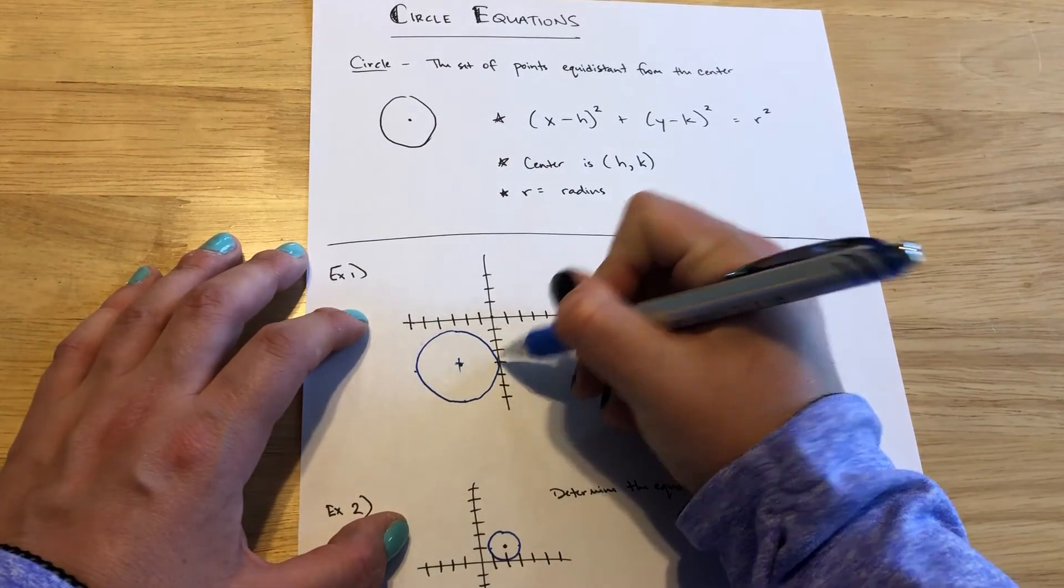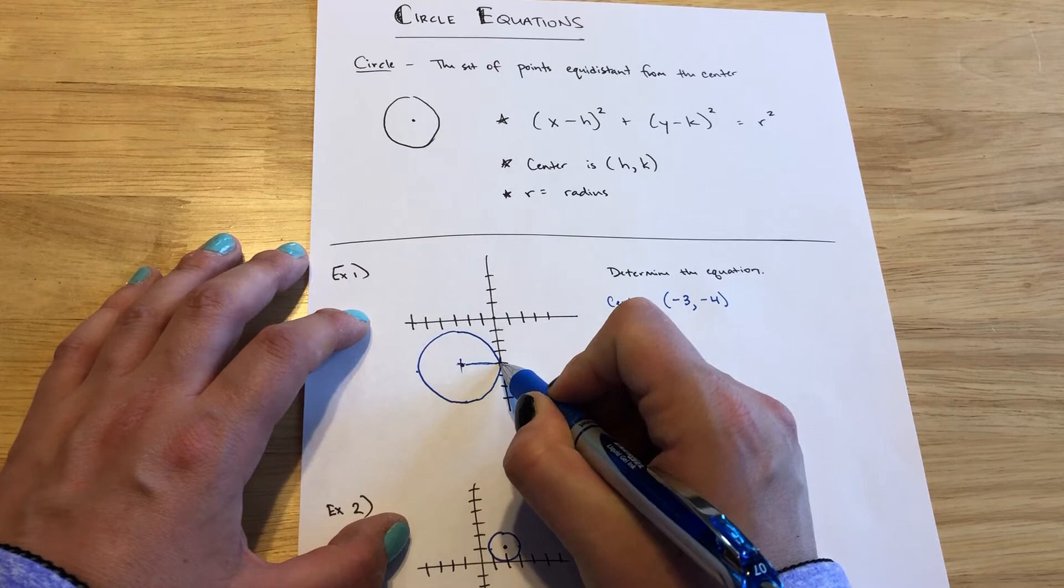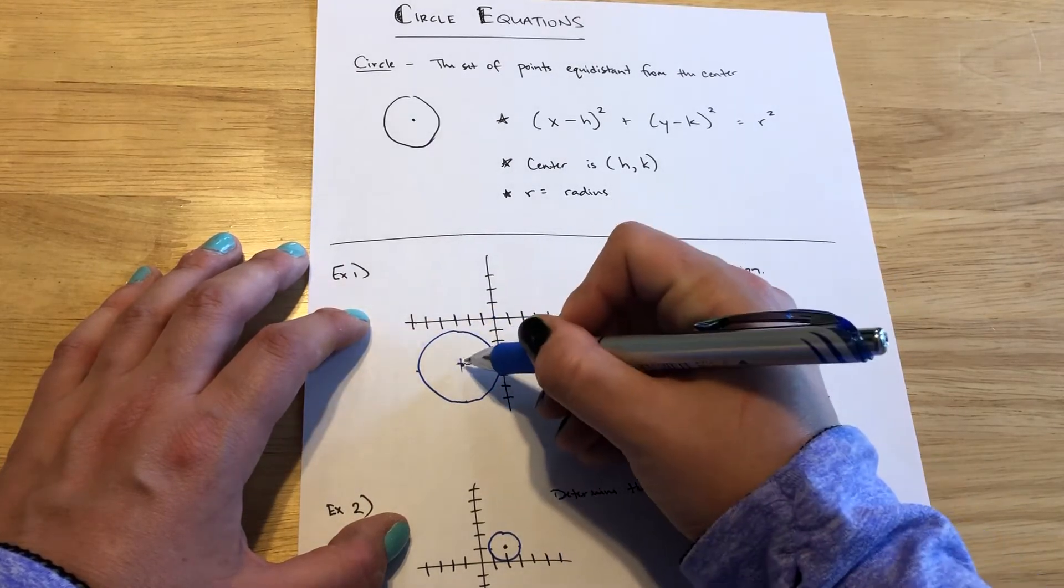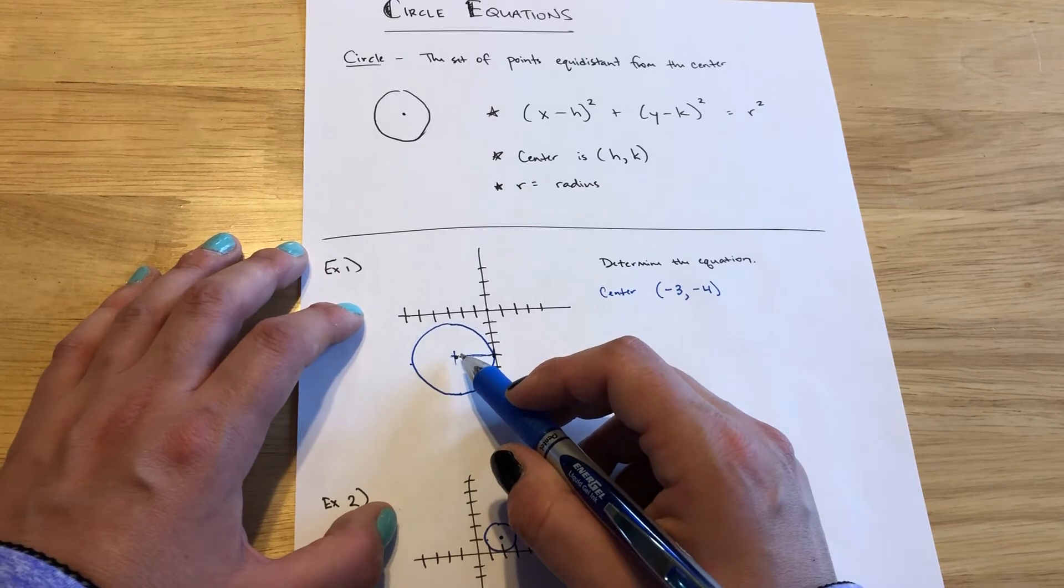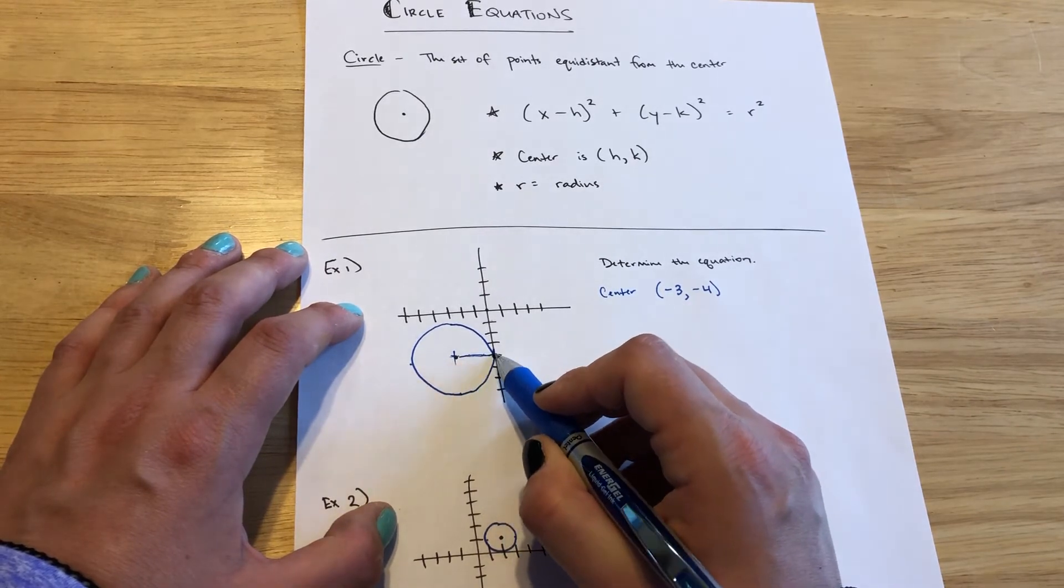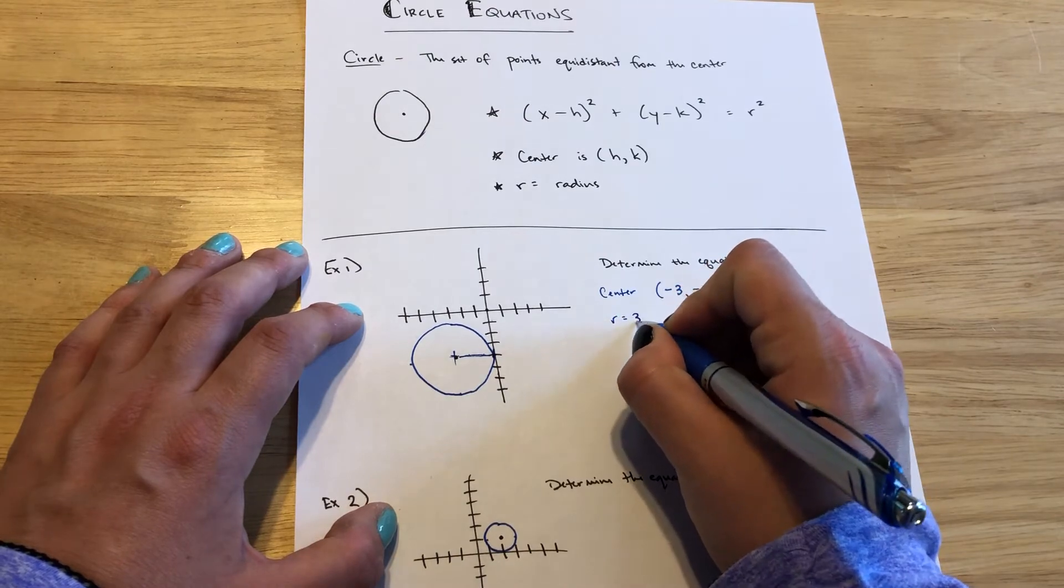And if I want to know the radius, I should look out to the edge, either straight right or straight up or straight down or straight left, so that we can use the axes to basically help us count that distance for the radius. So this radius is 3 units.